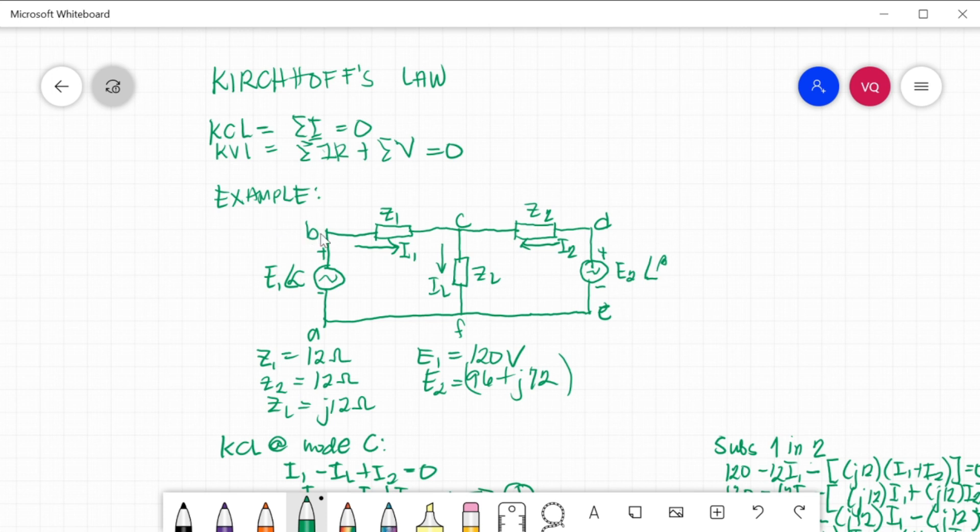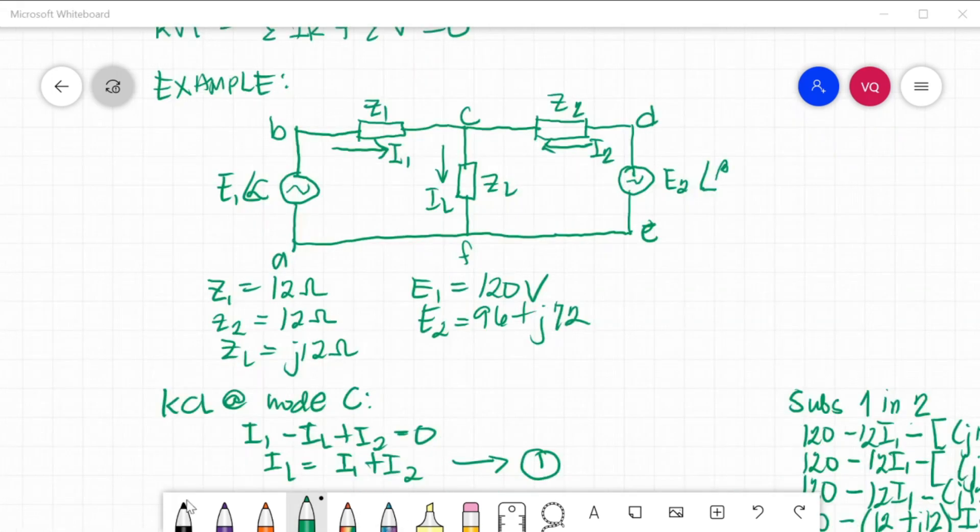We will take an example for Kirchhoff's Law. We have here two sources, E1 and E2, and E1 has an angle of alpha and E2 has an angle of beta. There are three impedances: impedance 1 connected to E1 and impedance 2 connected to E2, and this system has a load impedance equal to ZL. These are the direction of your currents, I1, I2. In Kirchhoff's Law, we name our circuit in its branches or nodes. So this is A, B, C, D, E, and F.